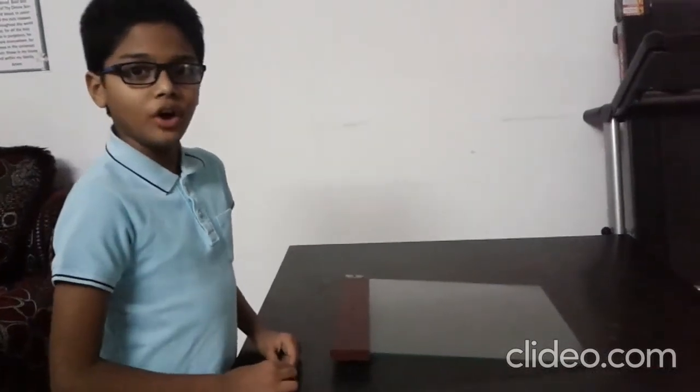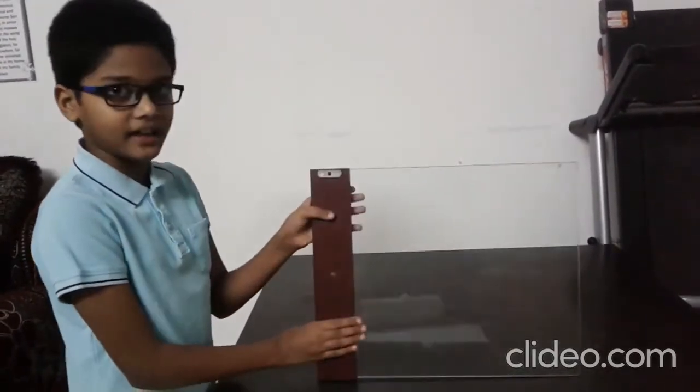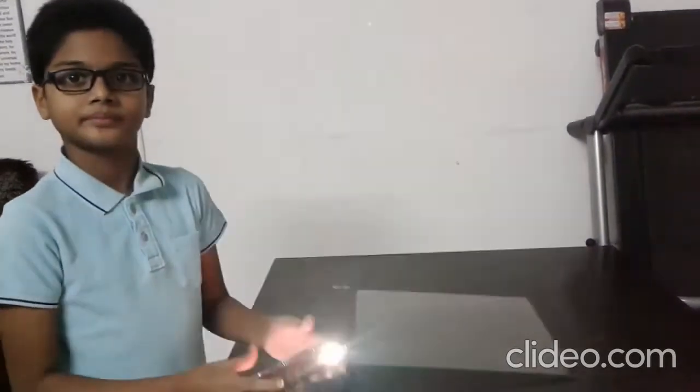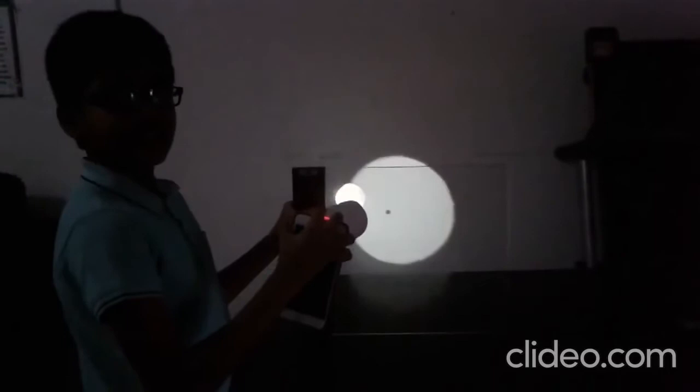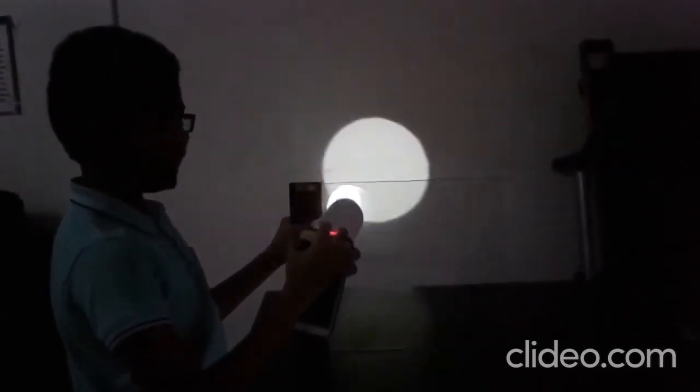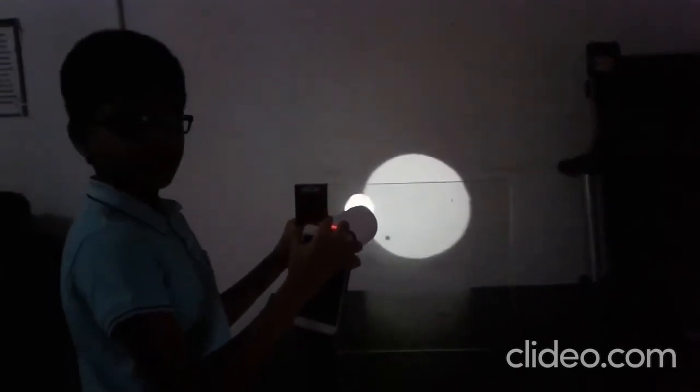Here I am going to show the example of a transparent object. This is a clear glass and this is a light source. Here the light easily passes through the clear glass. This is how we come to know this is a transparent object.